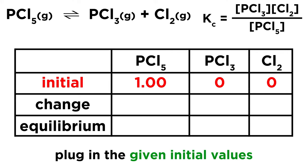So let's start by placing our initial concentrations. These are the ones that were given to us. So that's 1.00 for PCl5, and then we have nothing at the start for the two products.